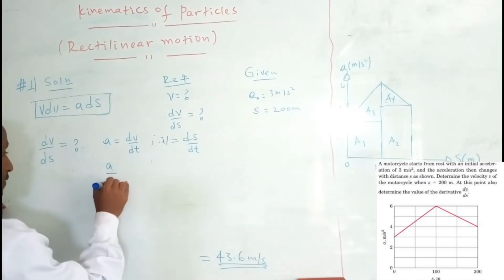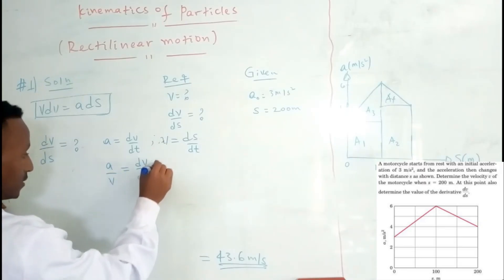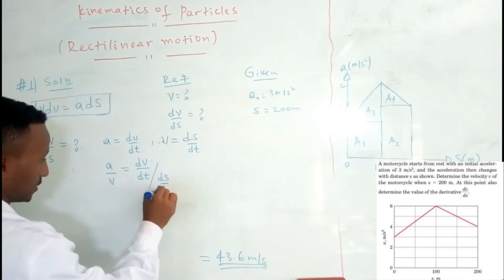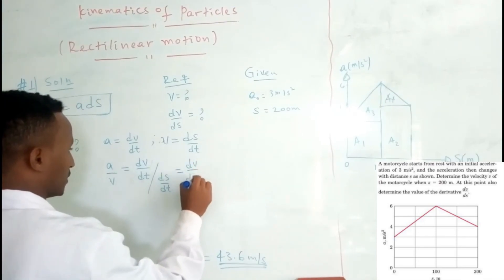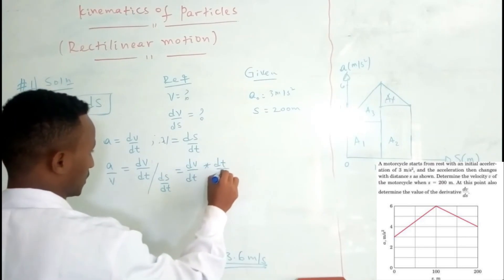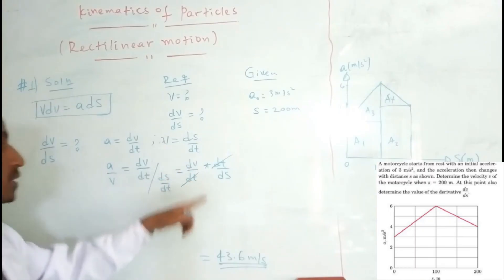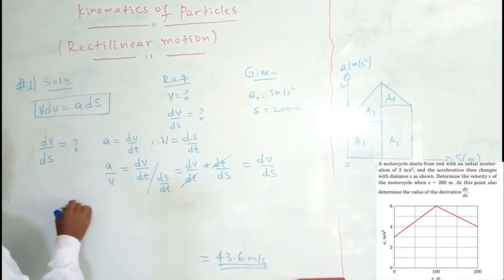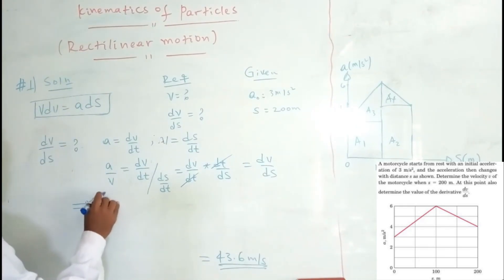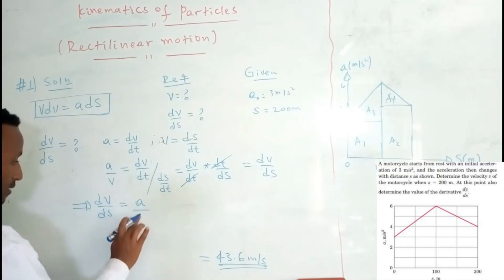Acceleration equals V times dV/dS. This implies that dV/dS equals acceleration divided by velocity. This gives us the rate of change of velocity with respect to displacement.